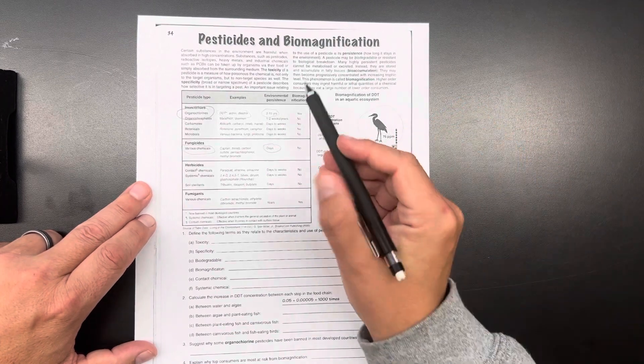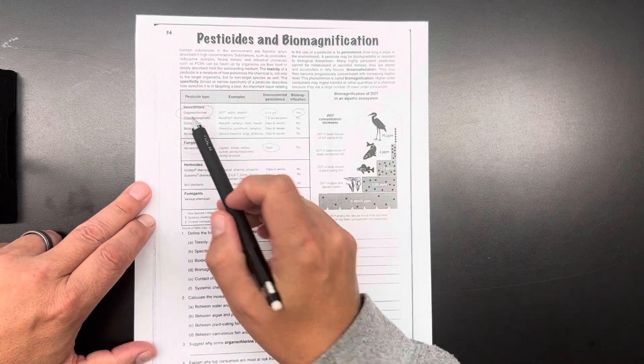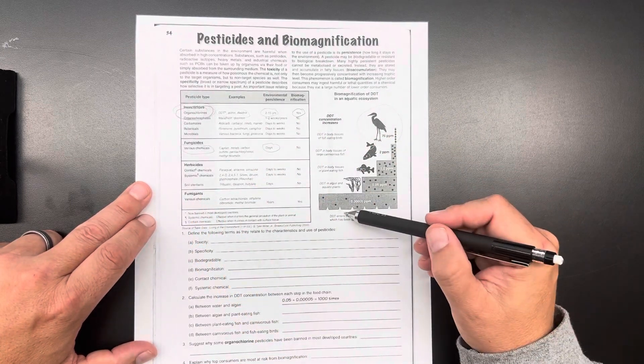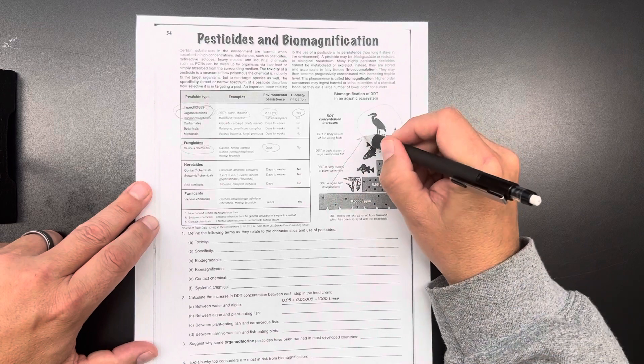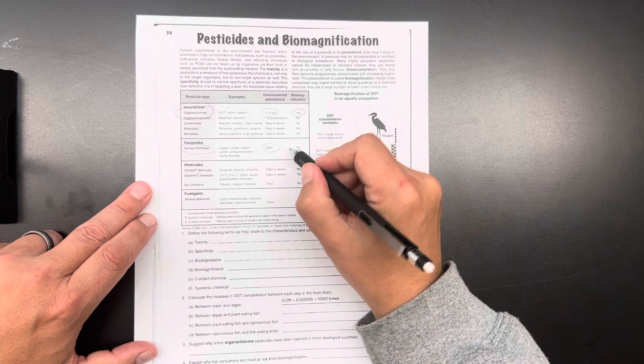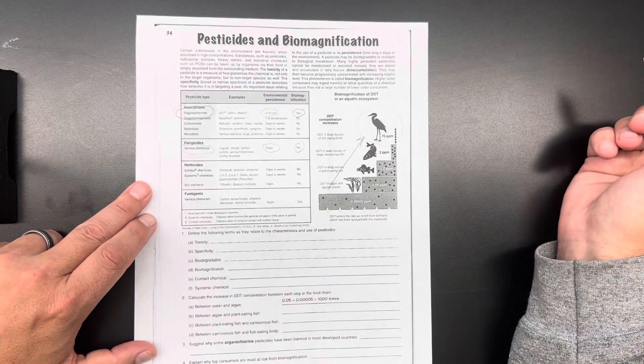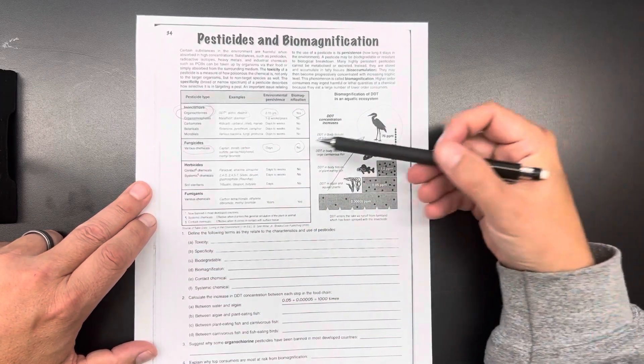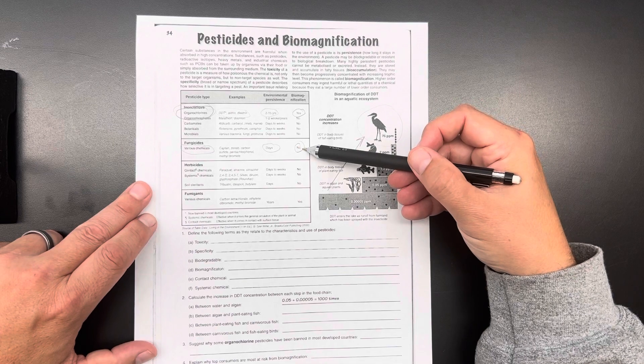Biomagnification. These ones do cause biomagnification. So it gets worse as you go up the food chain. But something like these fungicides, they don't accumulate in the fatty tissues. They don't accumulate in the body. So there's no biomagnification.